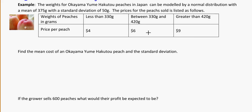Okay, so we're looking at the weights of, sorry about the pronunciations, Okayama Yume Hakutou peaches in Japan. These are kind of gourmet, deluxe, super delicious, amazing peaches in Japan that are actually quite expensive. For instance, you could pay like nine dollars for a single peach, but they're big and juicy and pretty fancy. So anyways, the weights of these peaches can be modeled by a normal distribution with a mean of 375 grams and a standard deviation of 50 grams. The prices for the peaches sold is listed as follows.